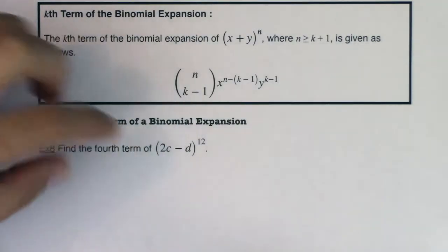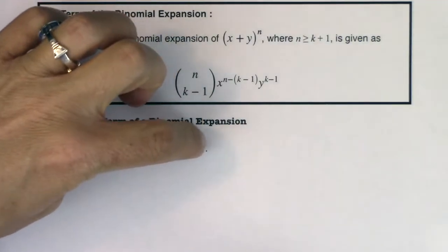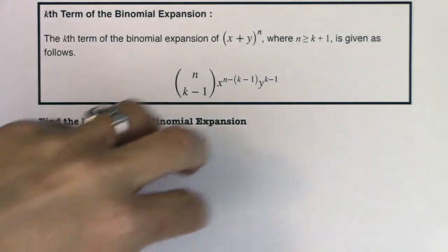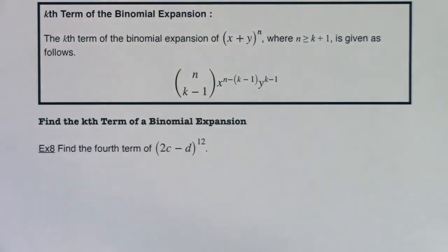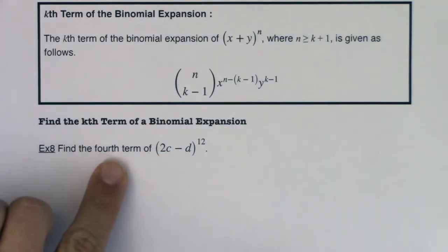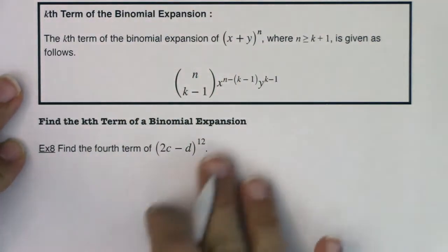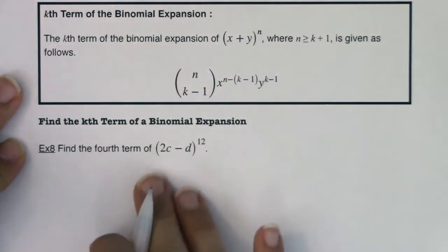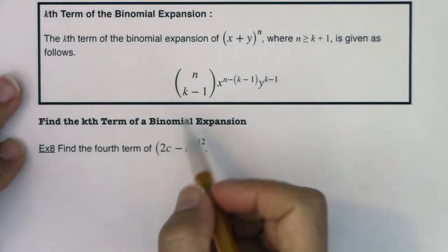And our first term would have that binomial coefficient of one, and it would be (2c)^12(−d)^0, right? And then we would do (2c)^11(−d)^1 as we started expanding our binomial. And this is saying, no, don't do the whole thing, just find the fourth term. All right, so let's try and line up the numbers in our terms, or at least the numbers and expressions in our example with what's going on here.